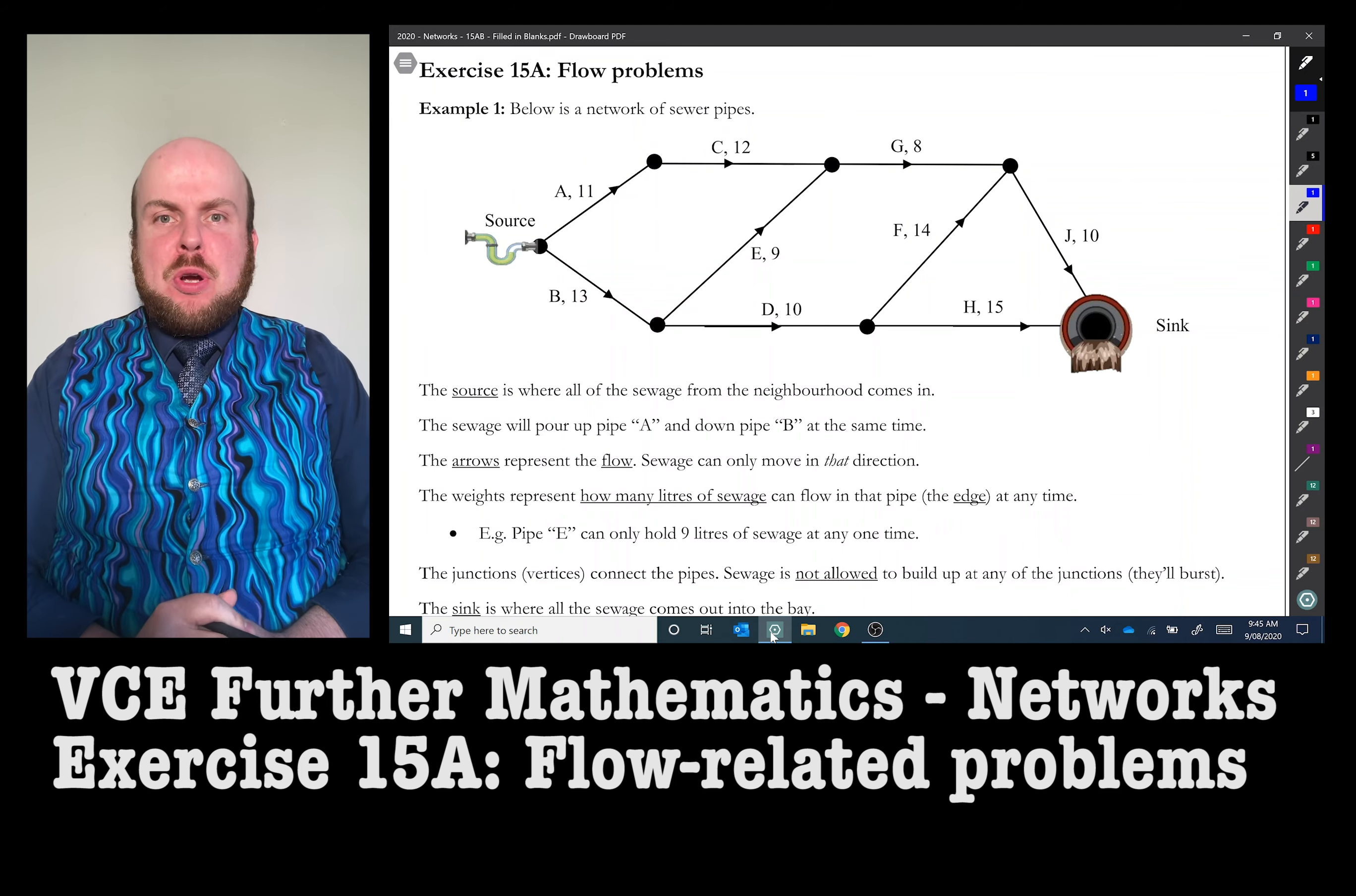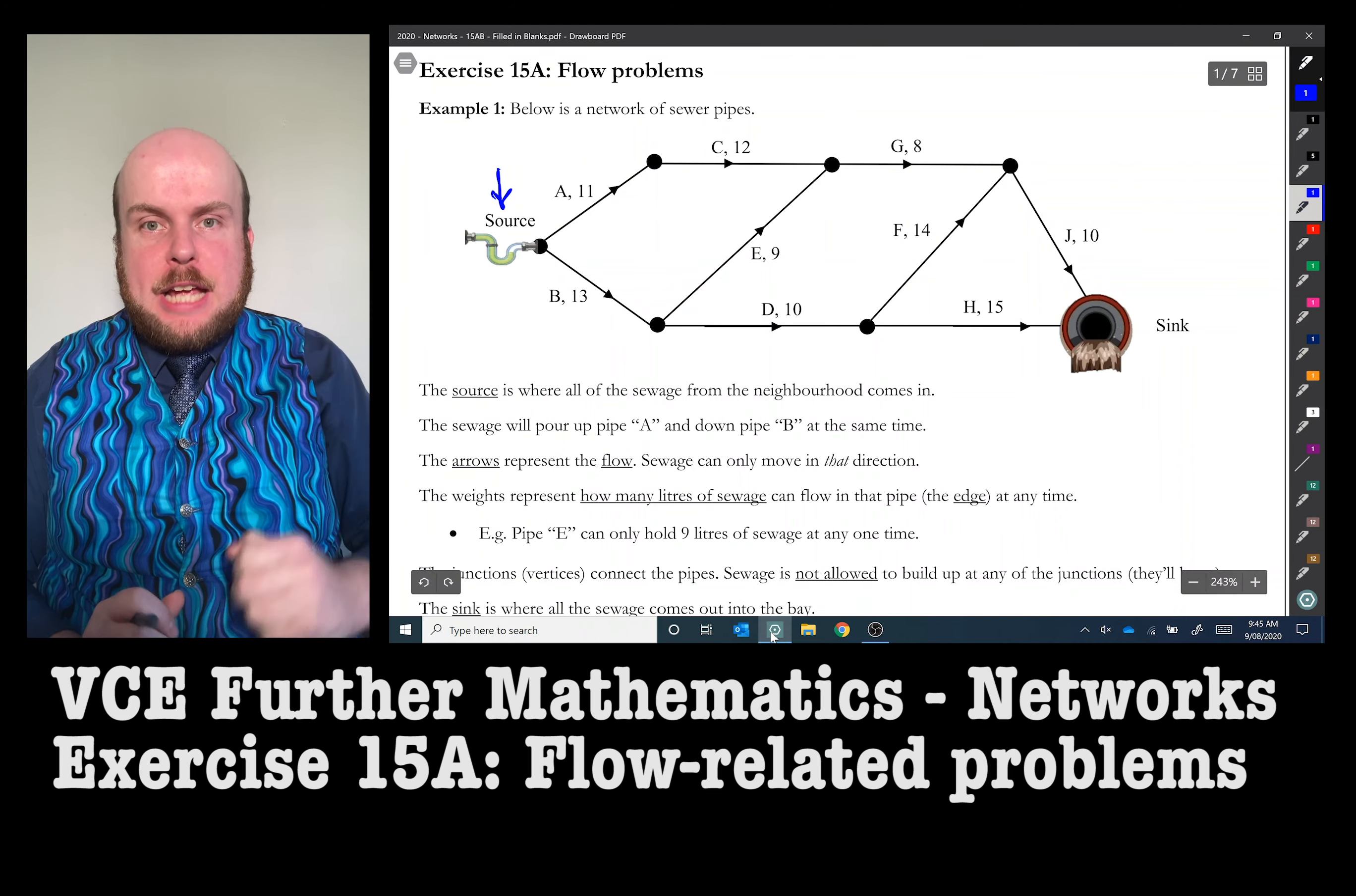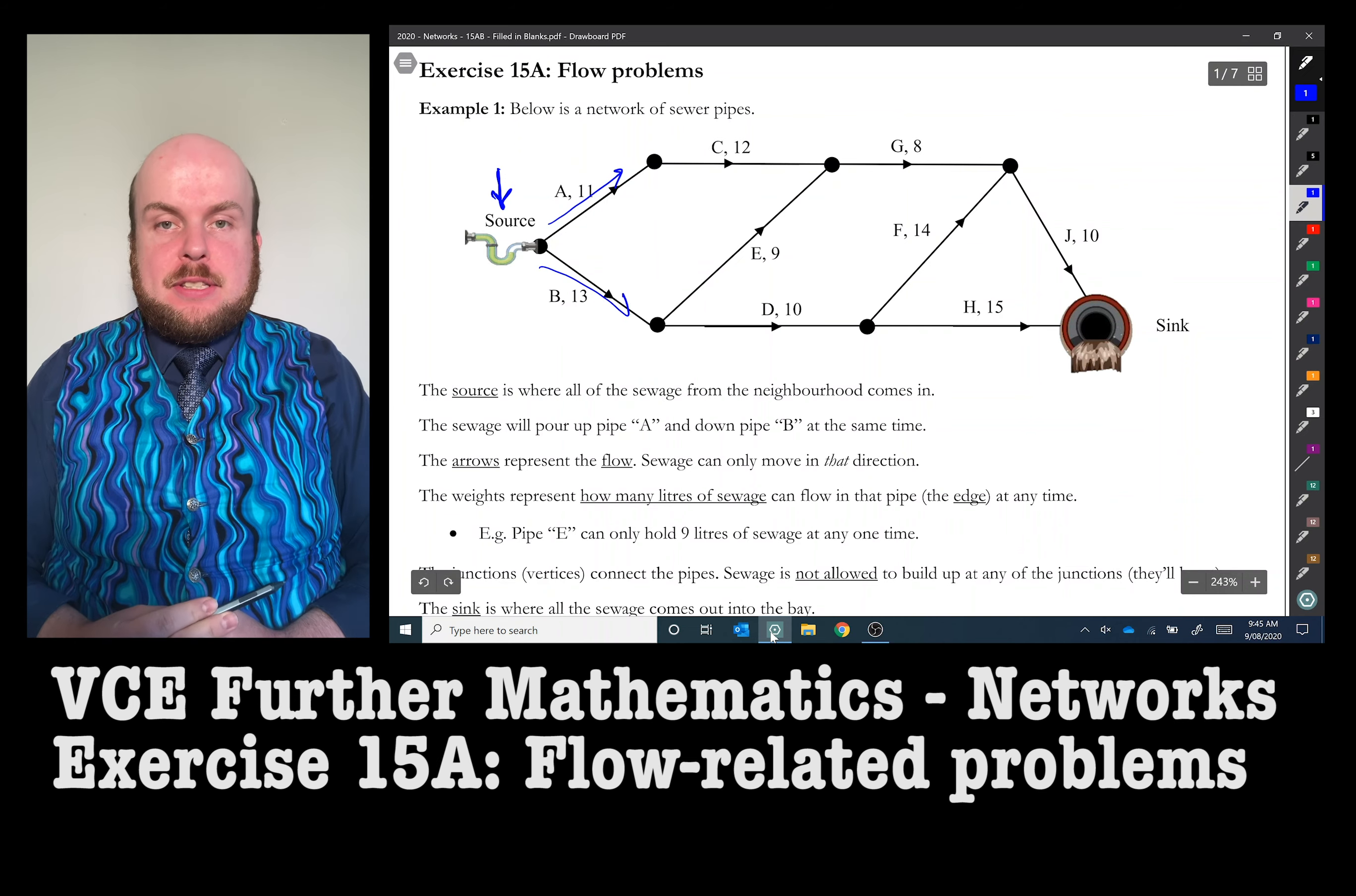Example one below is a network of sewer pipes. The source, which is this bit at the start, is where all the sewage from the neighborhood comes flowing in. The sewage will pour up pipe A and down pipe B at the same time. So it will flow through in this direction and in this direction simultaneously.